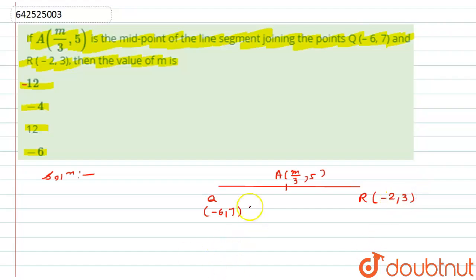Now, if A is the midpoint, then A will divide this line segment into 1:1 ratio.